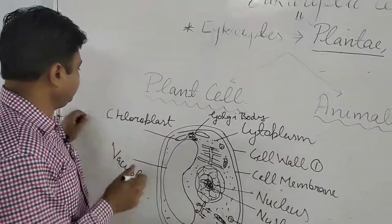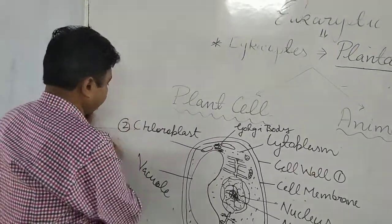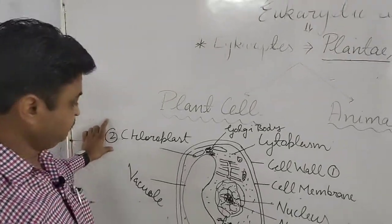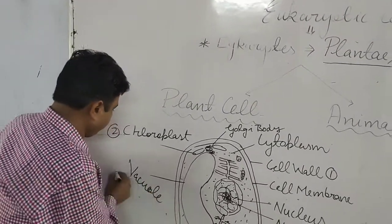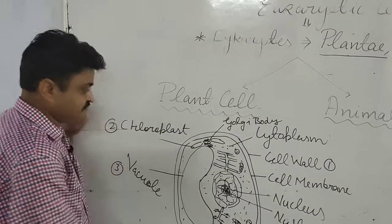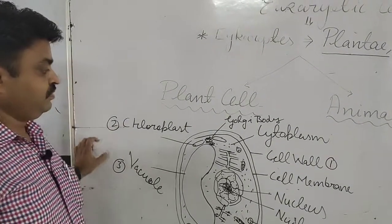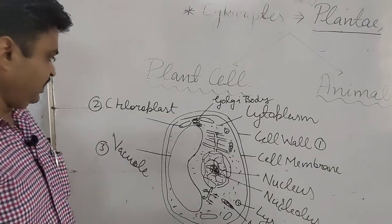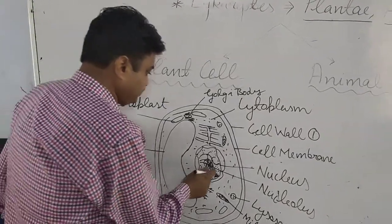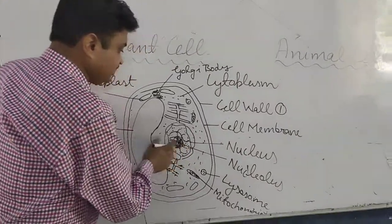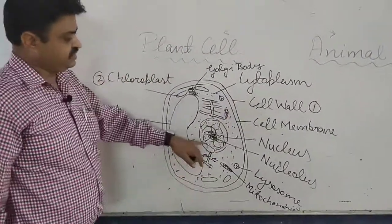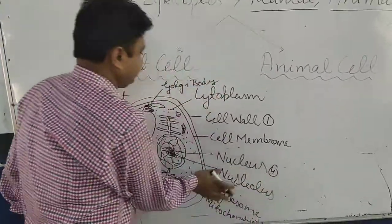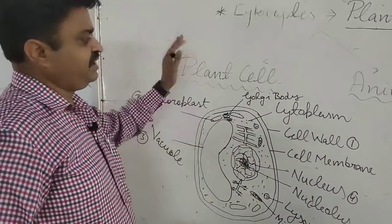So the four main characteristics of the plant cell are: cell wall, chloroplasts, a large-size vacuole, and the nucleus located at the side of the cell.